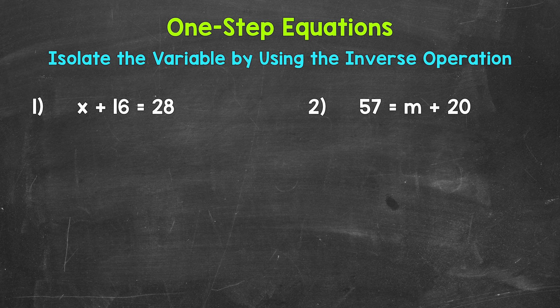When we solve one-step equations, we want to isolate the variable, which means get it by itself. Basically, we want to undo whatever is being done to the variable. That way, the variable is by itself on one side of the equation. We do this by using the inverse or opposite operation. Keep in mind, it is very important that whatever is done to one side of the equation, it must be done to the other. That keeps everything balanced and equal.